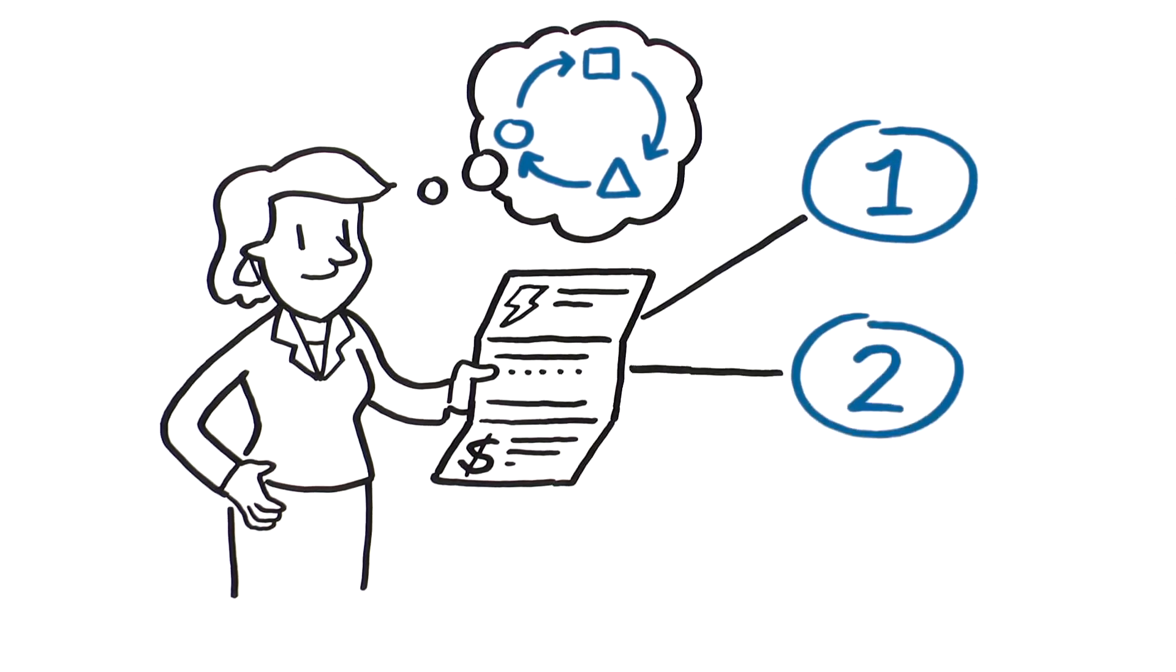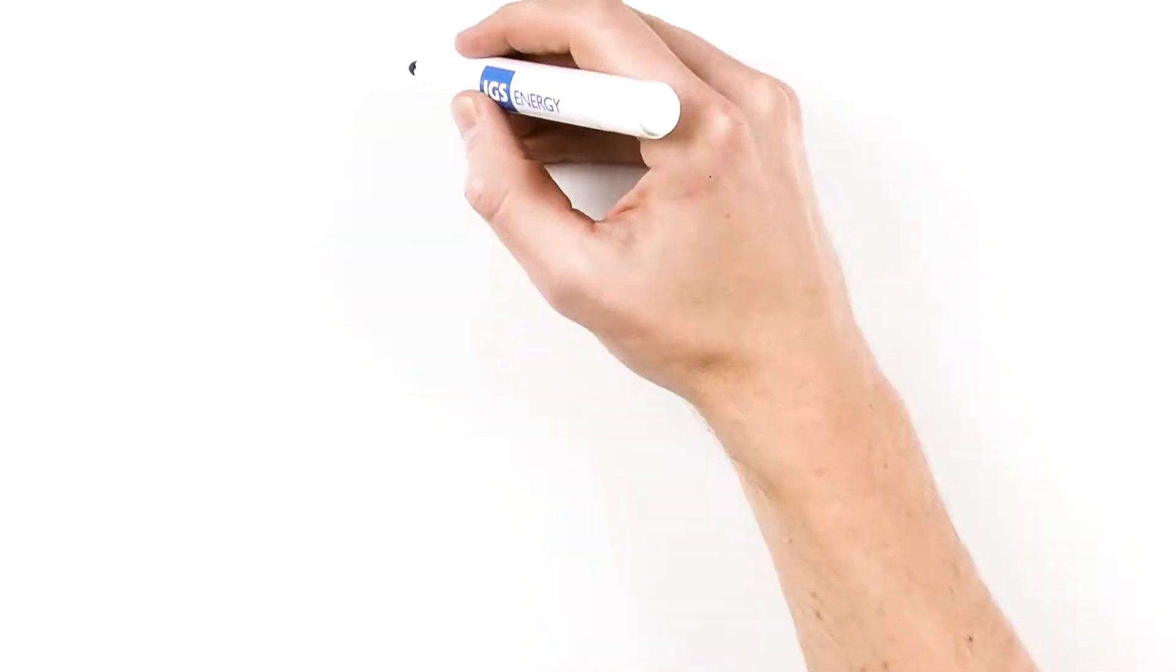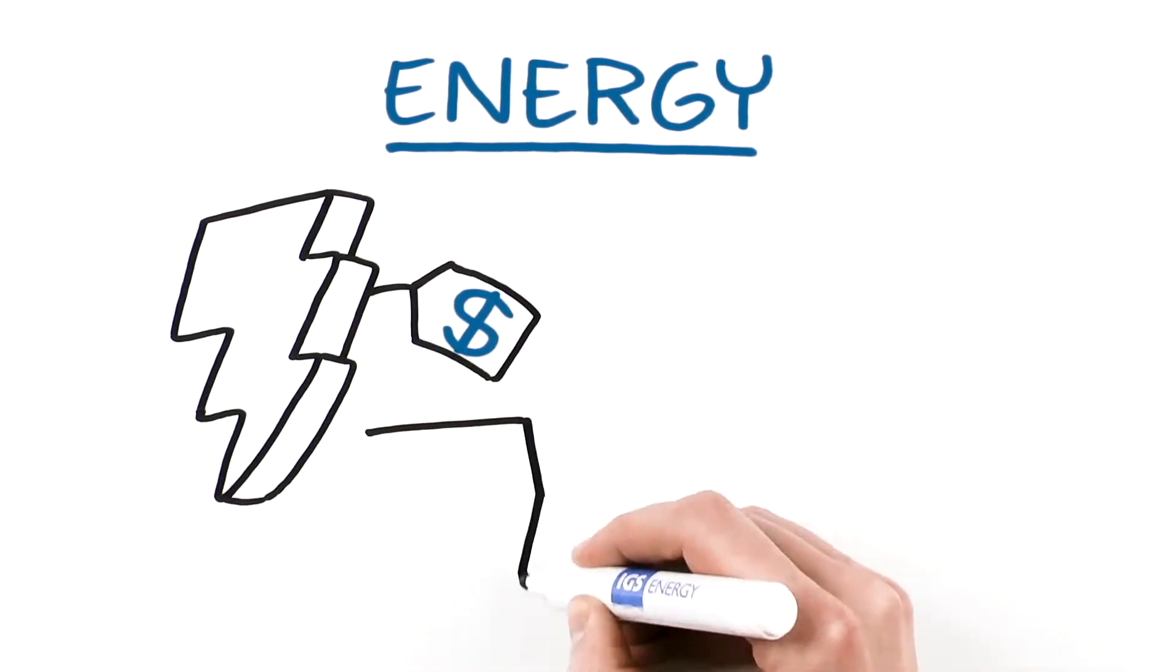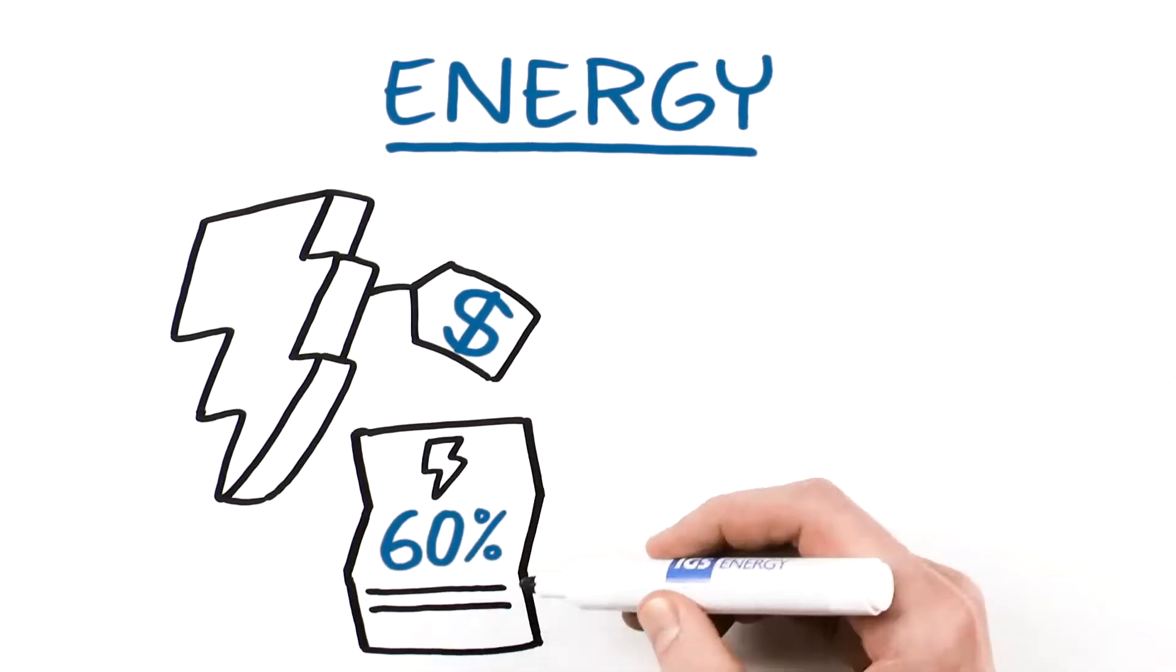There are three main components which comprise your bill. The largest component is the price of the energy itself, making up approximately 60% of the total cost.